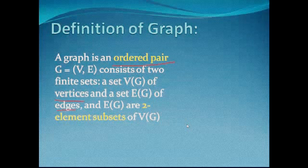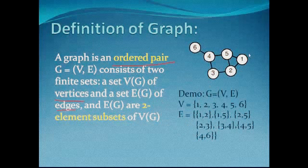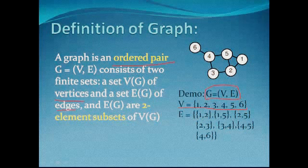The definition is quite abstract so here is a small demo. This is a graph expressed as G = (V, E). V is the vertex set — you can see there are six vertices, so V = {1, 2, 3, 4, 5, 6}. E stands for edges, which are two-element subsets of V(G), expressed as: {1,2}, {1,5}, {2,5}, {2,3}, {3,4}, {4,5}, and {4,6}.